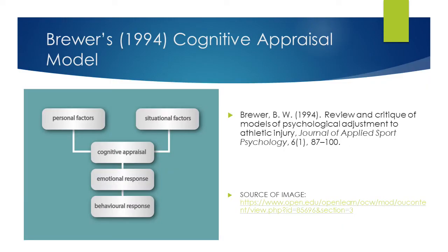Brewer's 1994 cognitive appraisal model, shown on screen now, suggests that how an individual appraises their injury — their cognitive appraisal — is influenced by two variables: personal factors and situational factors. Personal factors include things such as personality, age, and previous experiences of injury, while situational factors include things like the stage of the competitive year and social influences such as a coach's or teammates' reactions to an injury.